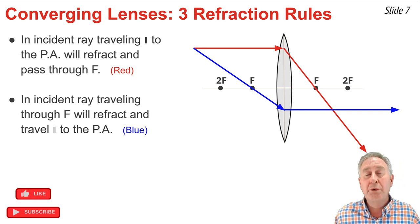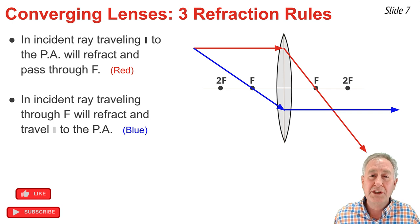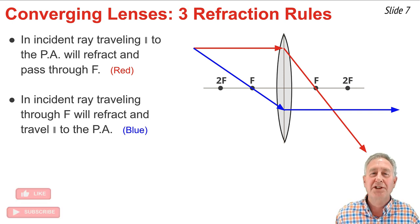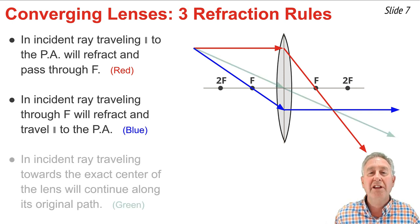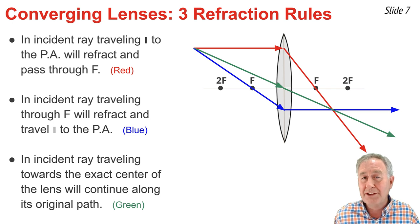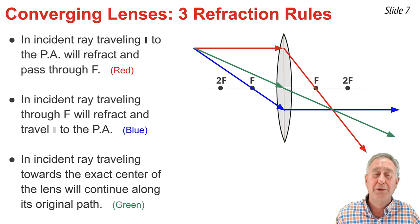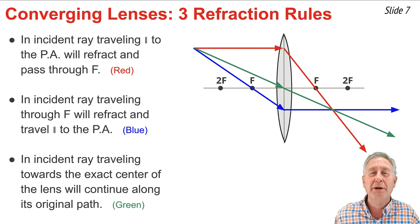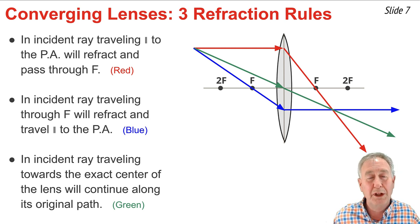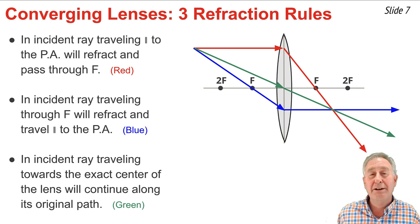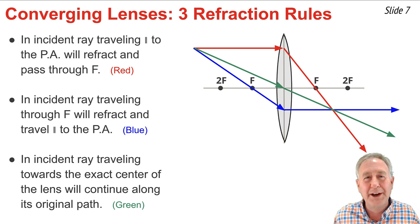The third rule was not shown on the previous slide. A ray of light that is heading towards the exact center of the lens will refract as it enters and refract as it exits, but the net effect of all the refracting is that the ray of light will continue along its original path. This is shown by the green incident and refracted ray on the diagram above.